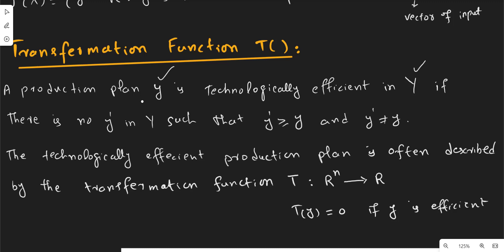Such possibility is shown by these conditions: there is no y prime such that y prime is giving you at least as much output as y.